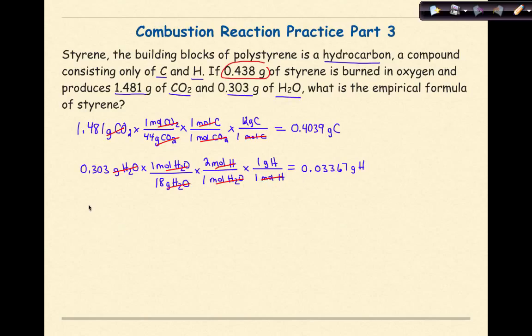I want to take my mass of carbon, 0.4039 grams of carbon, and 0.03367 grams of hydrogen, and convert it to moles. So, 12 grams of carbon is equal to 1 mole of carbon, and 1 mole of hydrogen is equal to 1 gram of hydrogen.